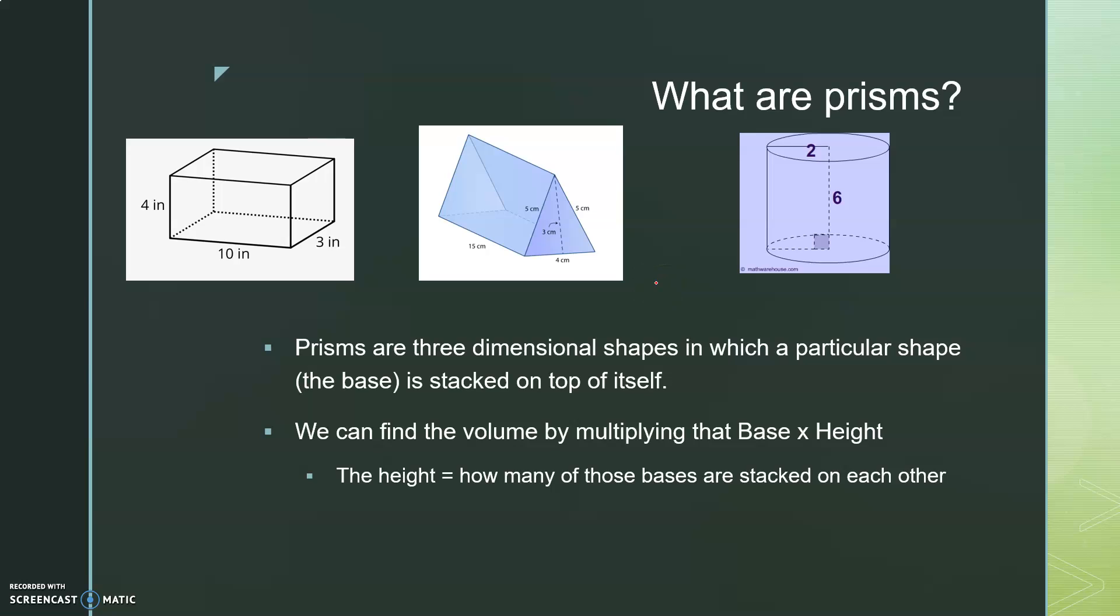First I want to just go over what are prisms in general. So prisms are any three-dimensional shape in which that particular shape, whatever it might be, which we call the base, is stacked on top of itself. So in this example, that base here was a rectangle, and then it's stacked on top of itself in layers. So you would take the base, which is 10 times 3, which is 30 square inches, and the height here is 4. So we multiply that by 4.